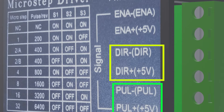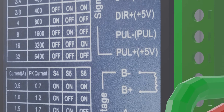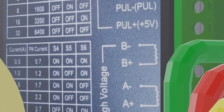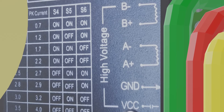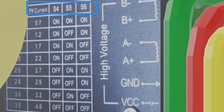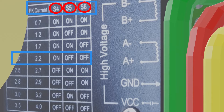The negative direction and negative pulse connect to the respective outputs of the PLC with a resistor. Now we will see the configuration of the amperage of the motor. We have the current on switches 4, 5, and 6, which we are going to configure for 2 amps, of which we will activate only switch 4.